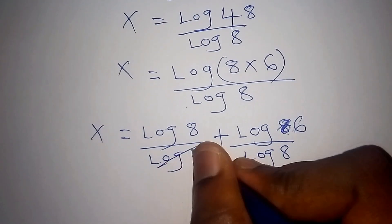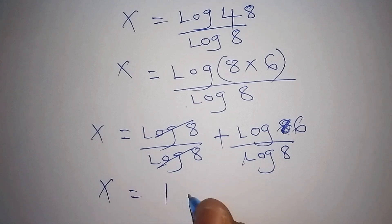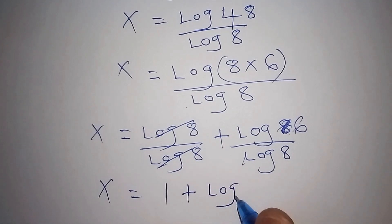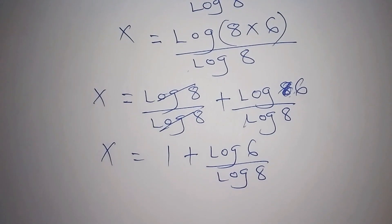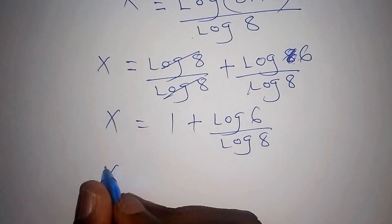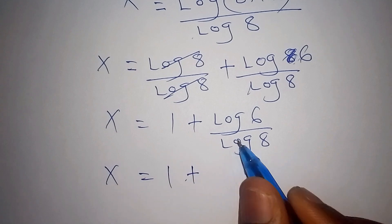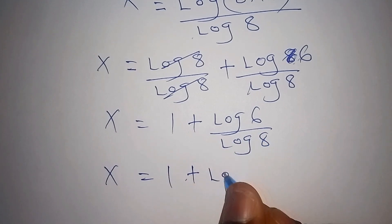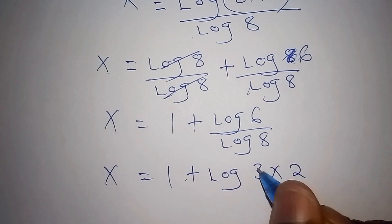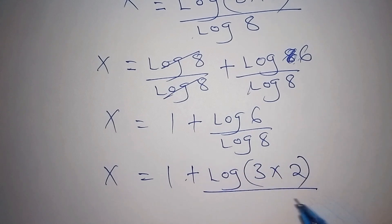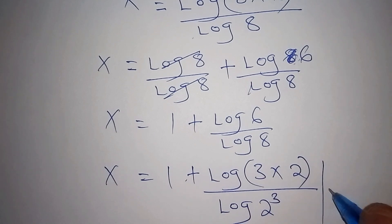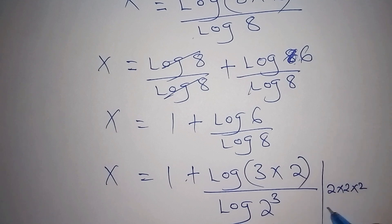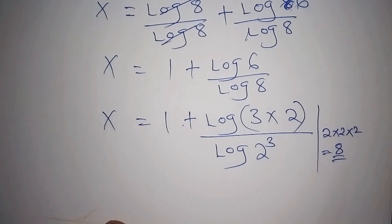The log of 8 over the log of 8 shall cancel to give 1. Proceeding, x equals 1 plus the log of 6 all over the log of 8. The log of 6 can be expressed as log of 3 multiplied by 2, and the log of 8 can be expressed as log of 2 to the power of 3, because 2 times 2 times 2 equals 8.